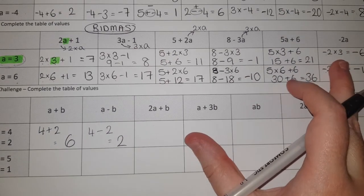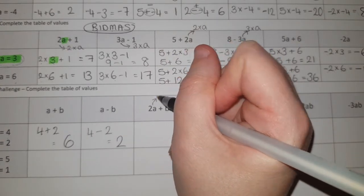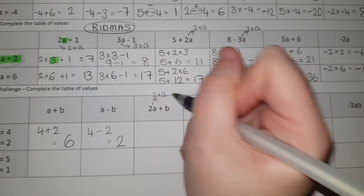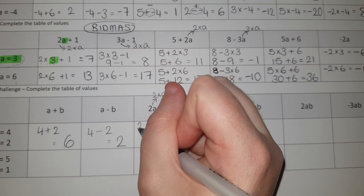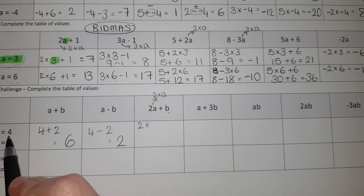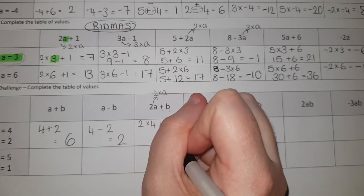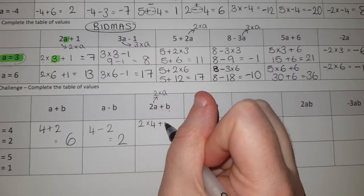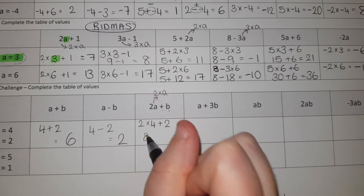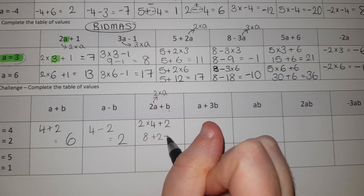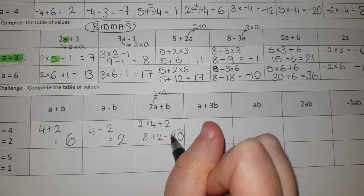On the next one, remember what we said - when you've got a number and a letter together, it means they're multiplied. So this means two times A and then add on B. So I do two times - remember A was four - plus, and B was two. So BIDMAS: two times four first, that gives me eight. Eight add two gives me ten as my answer.